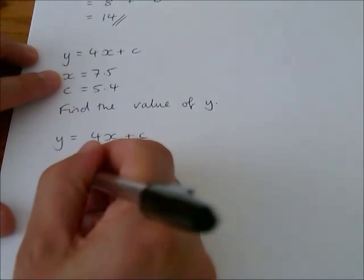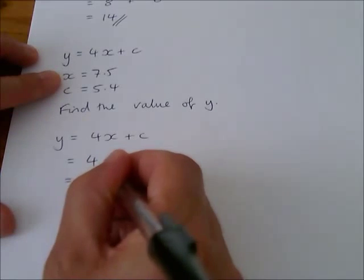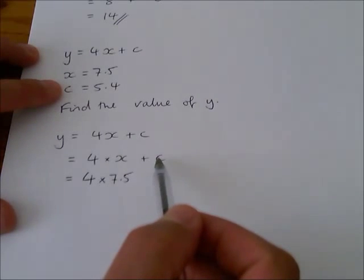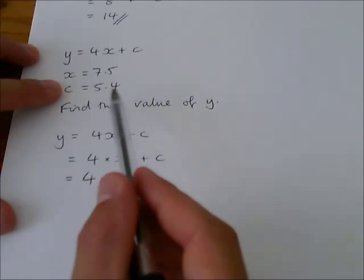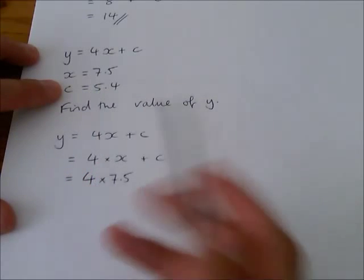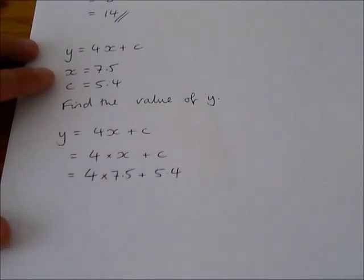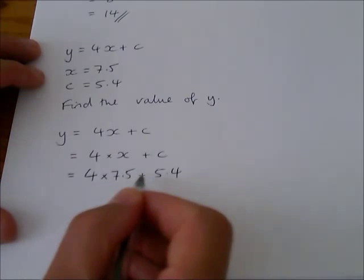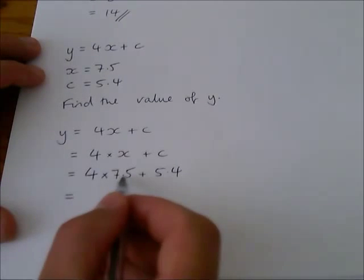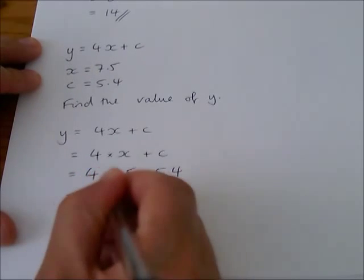So that means I can substitute that x that you see there for a 7.5. And this c here, this can be replaced because I know what it's equal to. It's equal to 5.4. So that means if I see the letter c, I know that it's going to stand for 5.4. Okay, now this time, I've got 4 times 7.5 plus 5.4. And you can just do that on your calculator, or if you need to, you can do 4 lots of 7.5, add it up, and then add on the 5.4. You'll get 35.4.